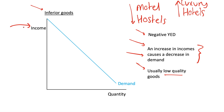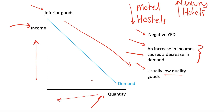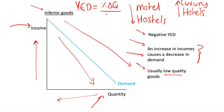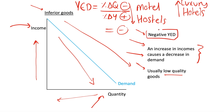Inferior goods have a negative YED, so on our income and quantity space we have a downward sloping demand curve. Remember, this is different from our usual price and quantity space — as incomes increase, quantity demanded decreases. Looking at our YED formula again: percentage change in quantity demanded divided by percentage change in incomes — if we increase incomes and demand decreases, we have a negative divided by a positive, which gives us a negative. So our YED is negative for inferior goods.